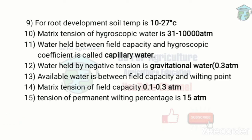We are going to discuss the physical classification of soil water. First is hygroscopic water. The matric tension is 31 to 10,000 atmosphere. Hygroscopic water is held at the hygroscopic coefficient, i.e., held by soil colloids. This water mostly moves in vapor form.